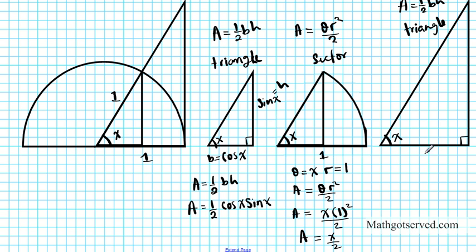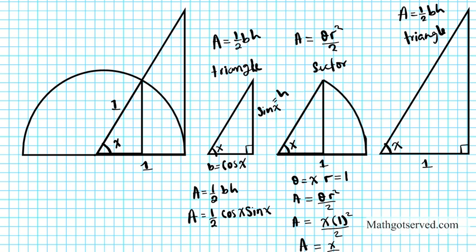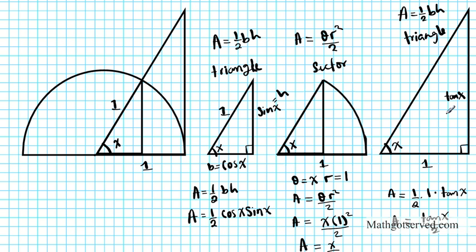For the last triangle, the adjacent side is 1, which forces the height to be tan x. Using SOHCAHTOA, tan x equals opposite over adjacent, and since the adjacent is 1, the height is tan x. So the area of this triangle is one half times base (1) times height (tan x), which gives tan x over 2.